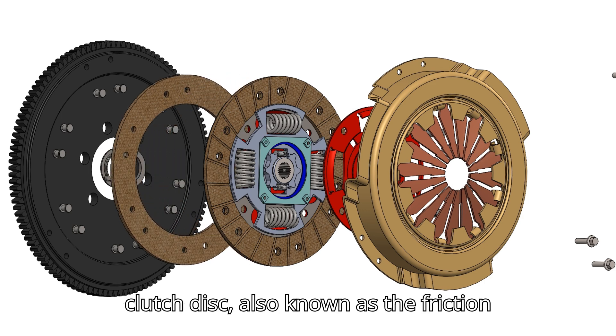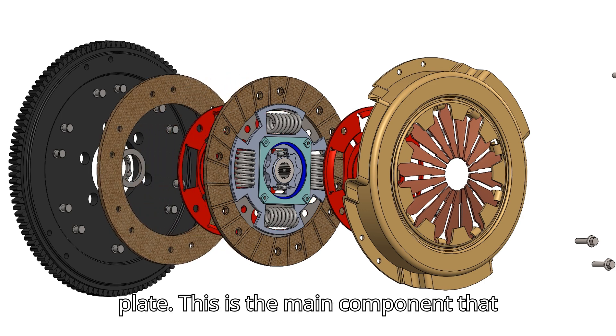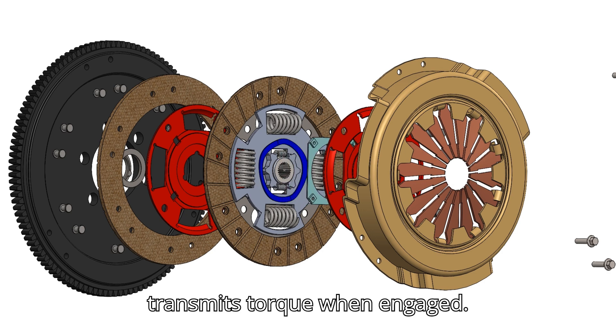Next is the clutch disc, also known as the friction plate. This is the main component that transmits torque when engaged.